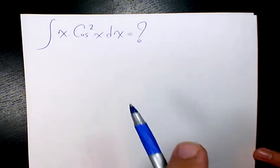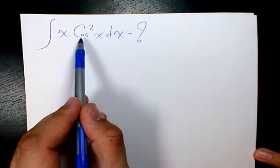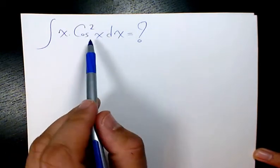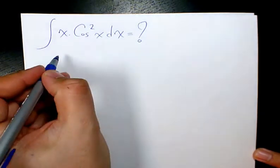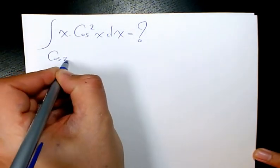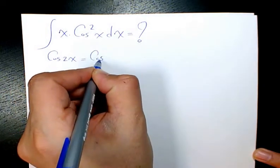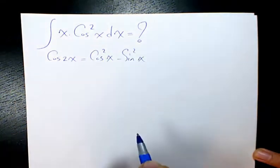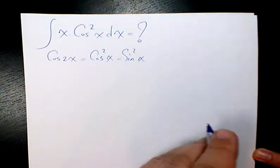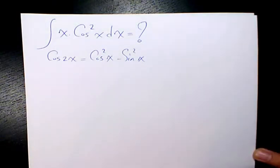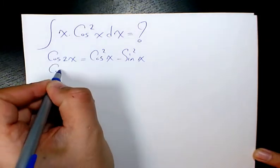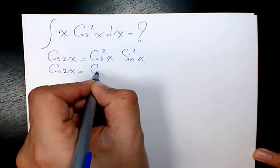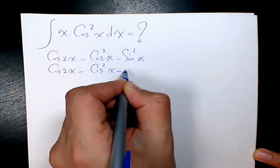First of all, cosine squared x, I need to somehow change it. From the double angle formula, we know cosine 2x will be cosine squared x minus sine squared x. And we know sine squared plus cosine squared is going to be one. Therefore, I can say instead of sine squared, I can write one minus cosine squared x.